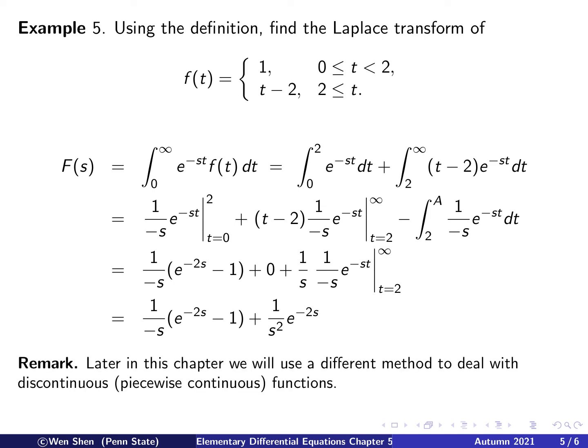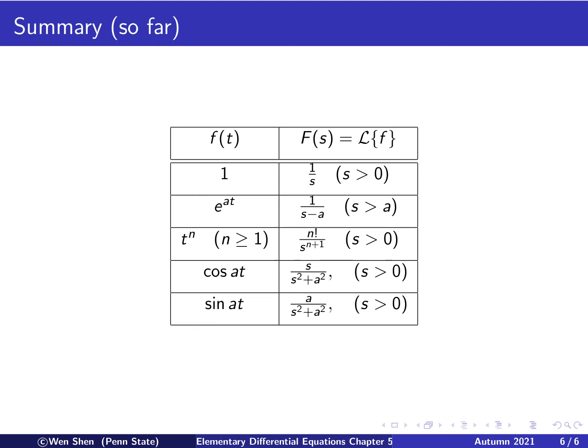Let me put in a remark here that later in this chapter we will use a different method to deal with discontinuous or piecewise continuous functions. So this is one way of finding it, and later there is another way based on some interesting properties of the Laplace transform — so this is not the only way. Let's summarize all the Laplace transforms computed so far. We have three from previous videos and now added two more: cosine of a t gives s over s squared plus a squared, and sine of a t gives a over s squared plus a squared, valid for s bigger than zero. Next time, we will look at properties of the Laplace transform and a whole lot more. Hope you enjoyed this one — I'll see you next time.